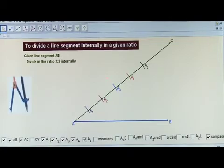Since the line segment is to be divided in the ratio 2 is to 3, we have to draw 2 plus 3 equal to 5 arcs. Now, what do you expect?